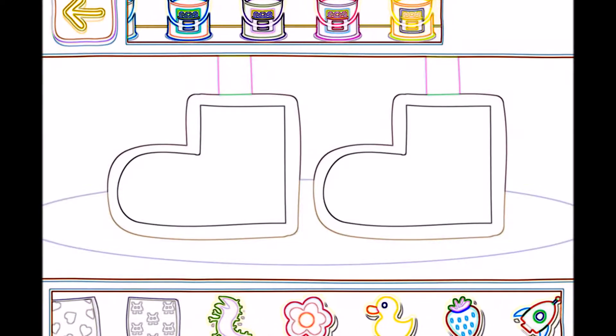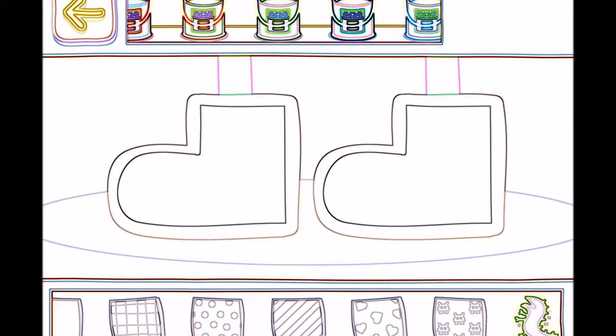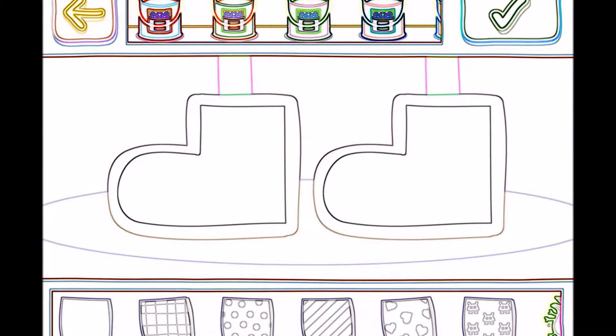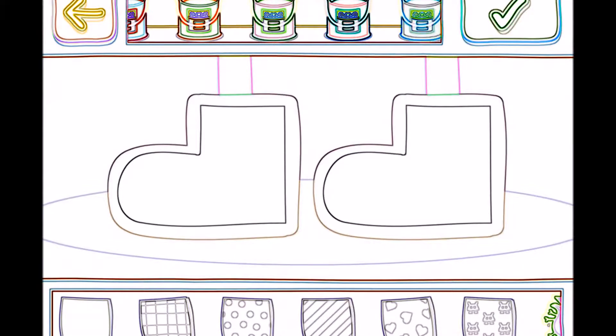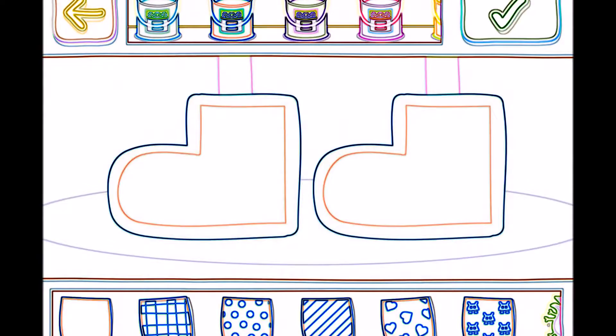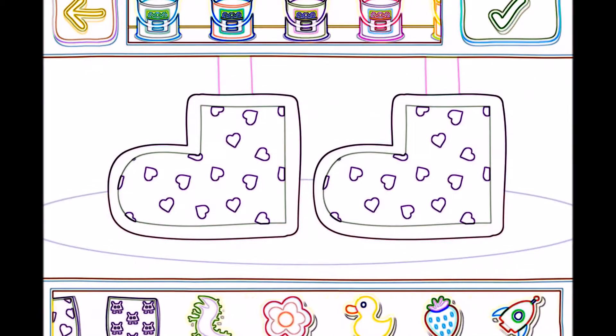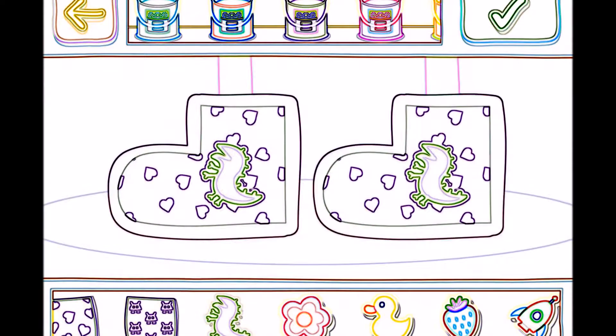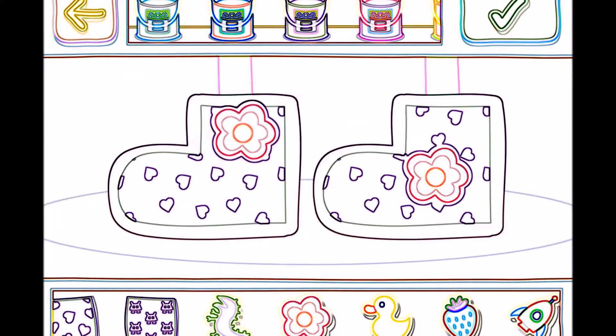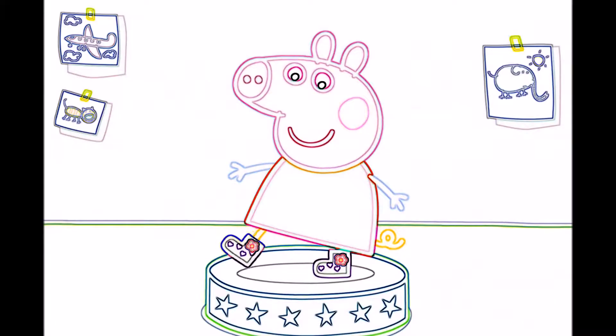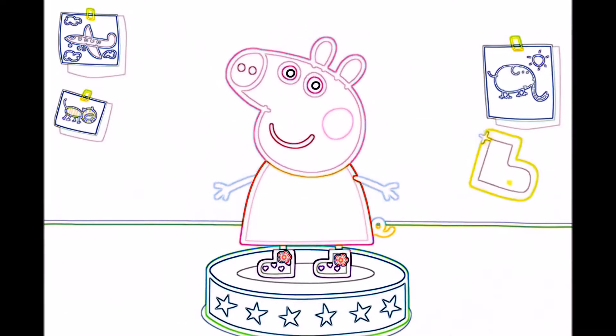Choose a colour, a pattern, and some stickers. When you are finished, press the green dutch button to change Peppa's clothes. What a great pair of boots. And look, there is a golden boot. Tap the golden boot to collect it.